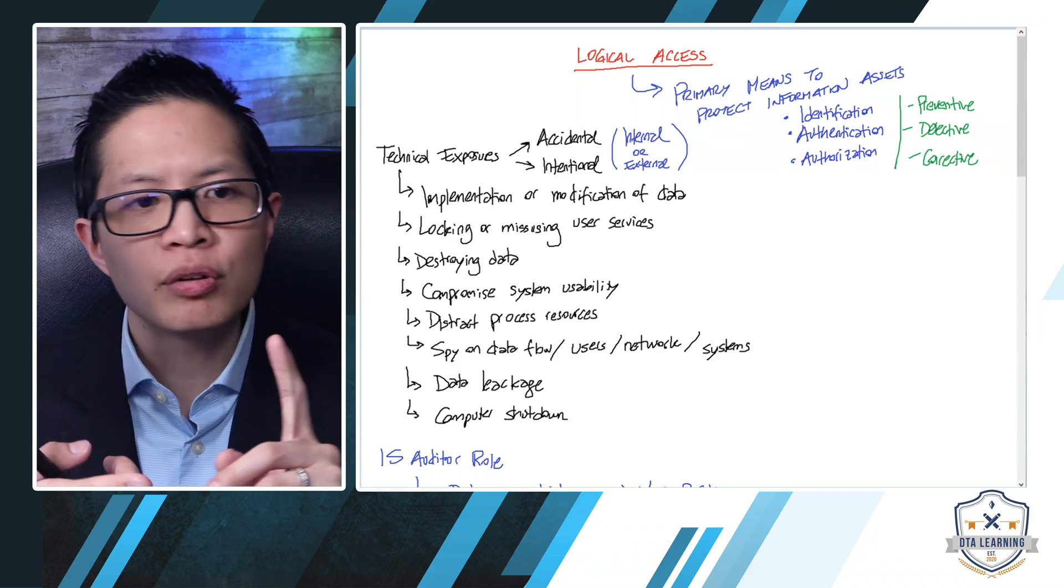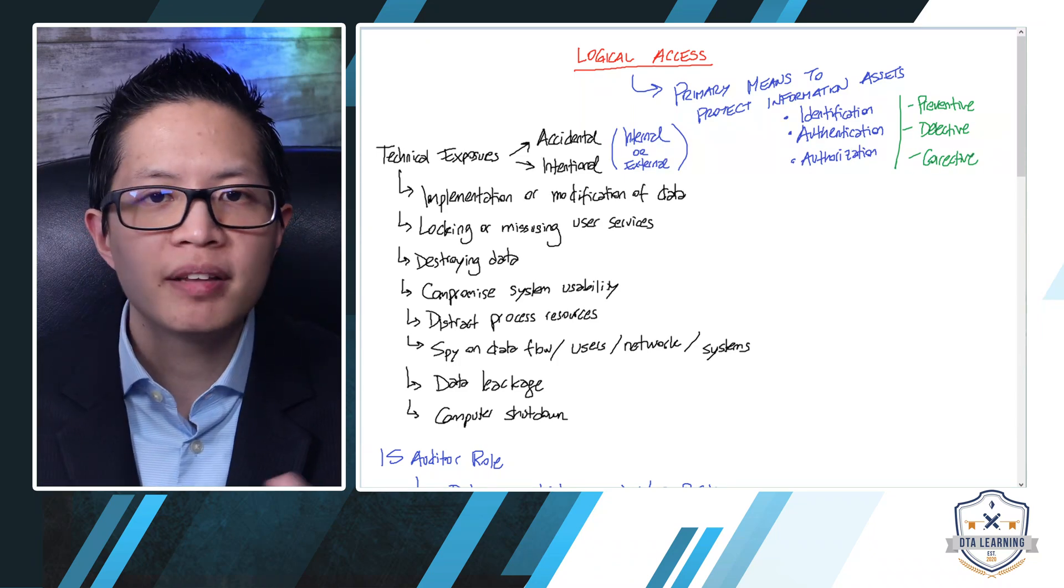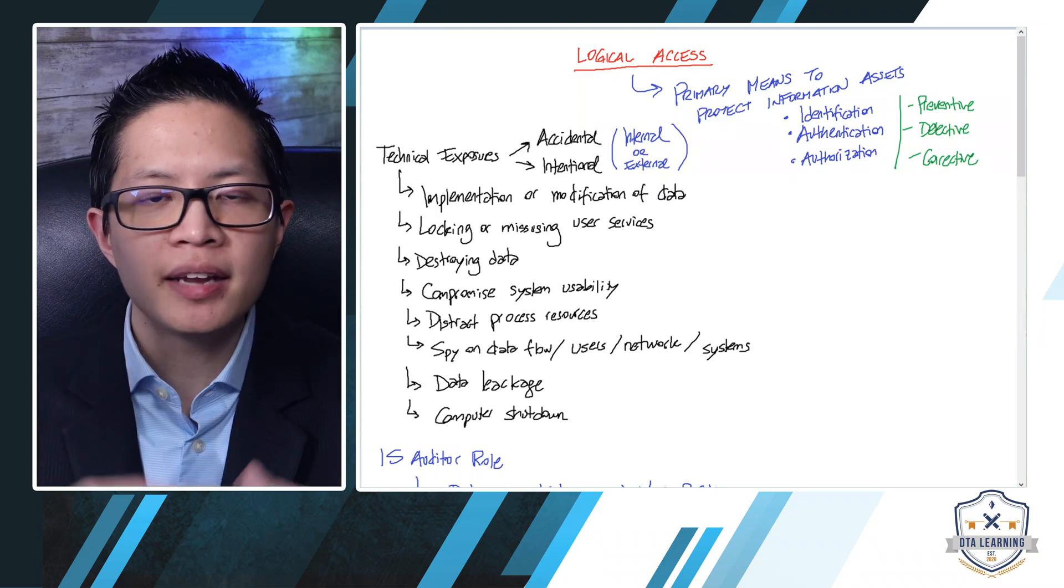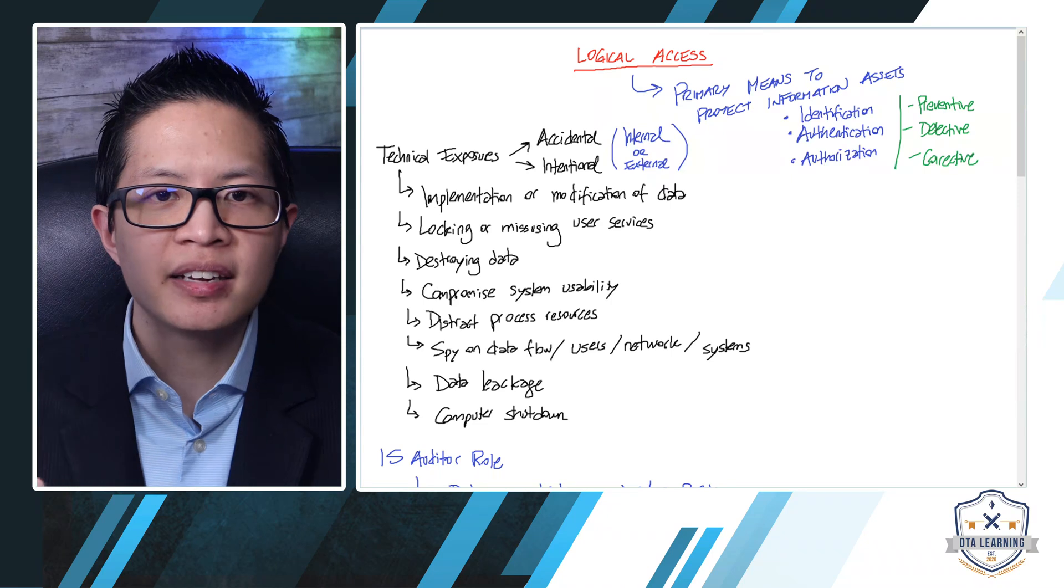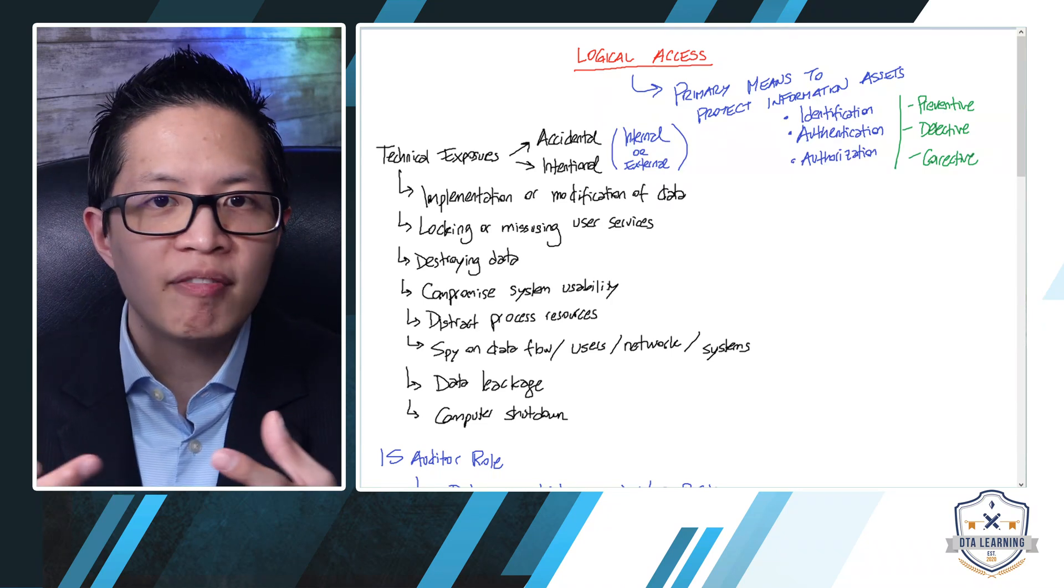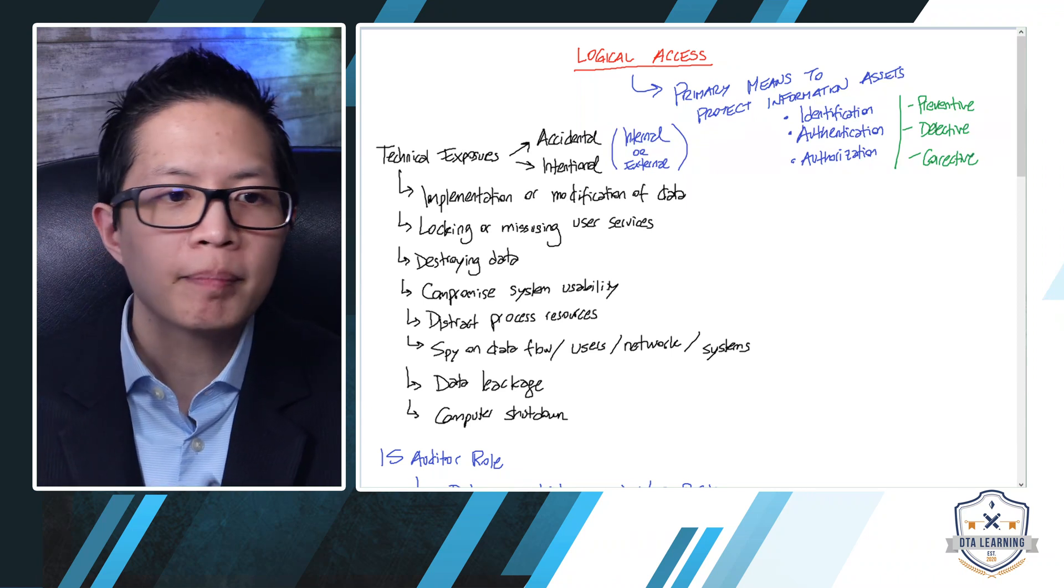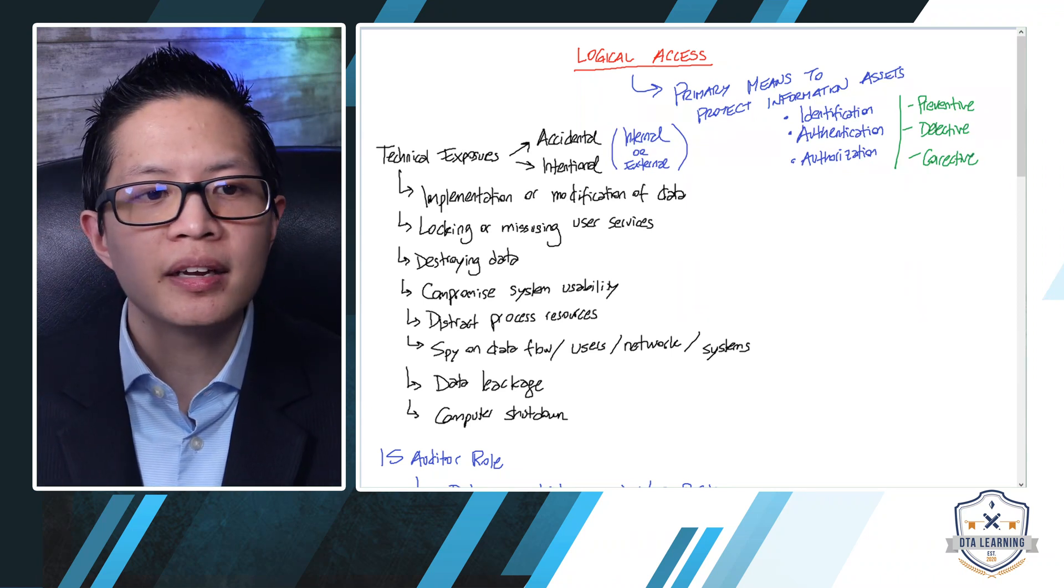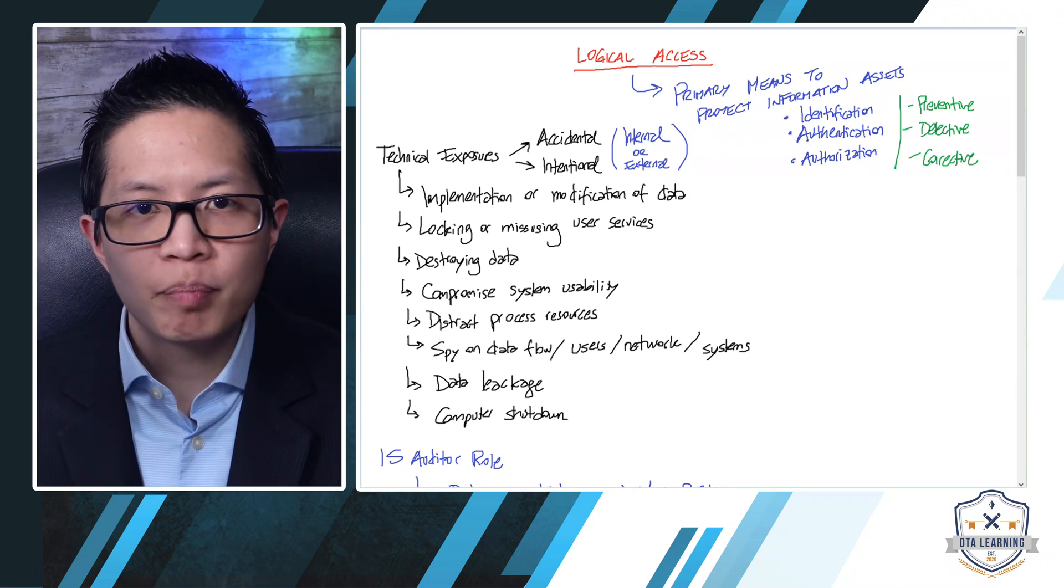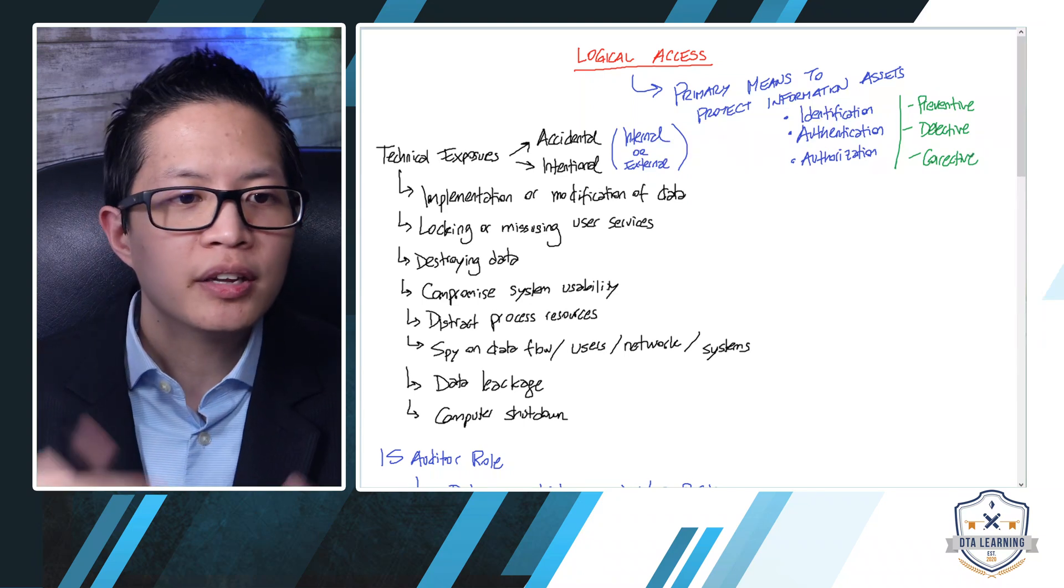So, for example, they could either implement or modify data. Let's say, for example, they have access to your database. Well, they can just put more data over there. Hey, we made more sales, and suddenly sales are part of a compensation for a certain employee. Now, they're going to have a better compensation, right? Locking or misusing user services, meaning that probably you're using a service on a server that you shouldn't be using. Destroying data,